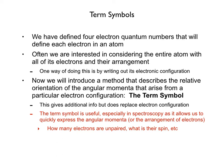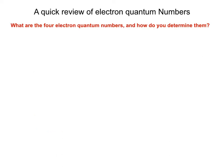The term symbol is another way of looking at electronic configurations — more useful in spectroscopy for thinking about the energetic states of an atom. It tells us things like how many electrons are unpaired and what their spin is.